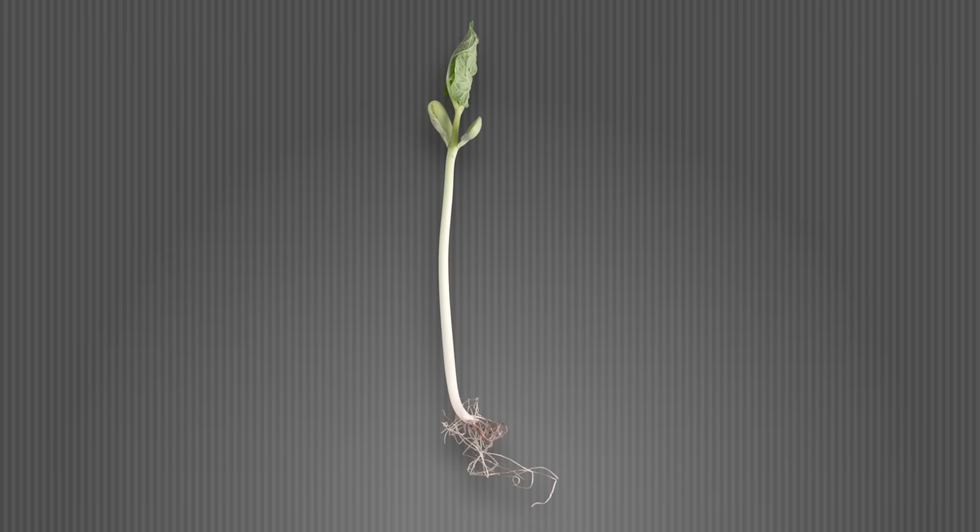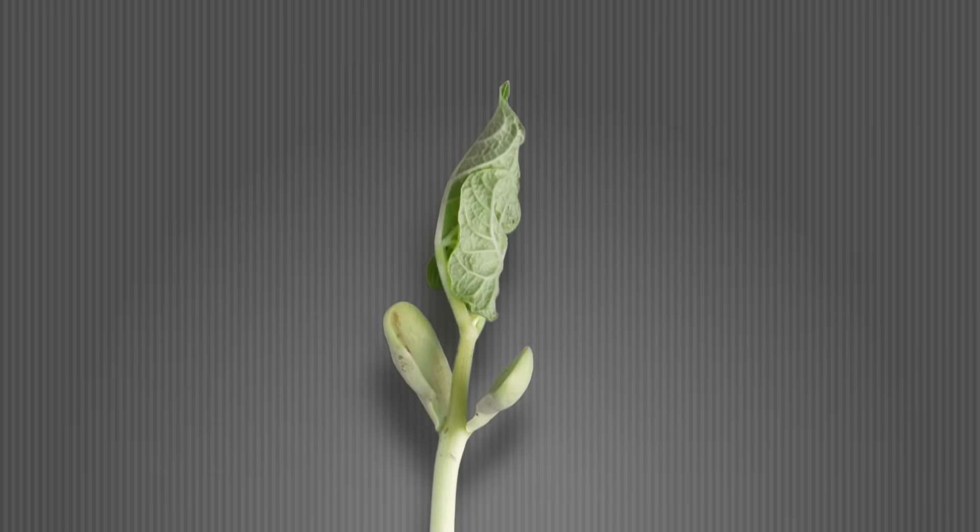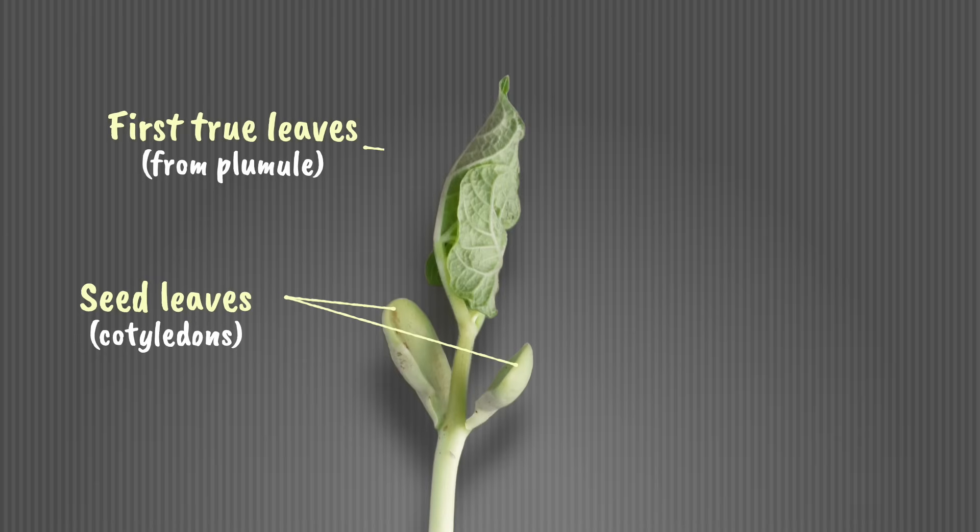A few days later the shoot has emerged from the cotyledons. You can see here the cotyledons have become leaf-like structures. These are known as seed leaves. They are green and able to carry out photosynthesis until the first true leaves developed from the plumule are established.